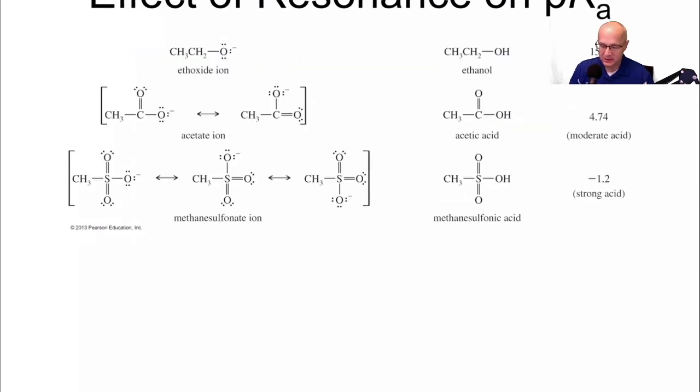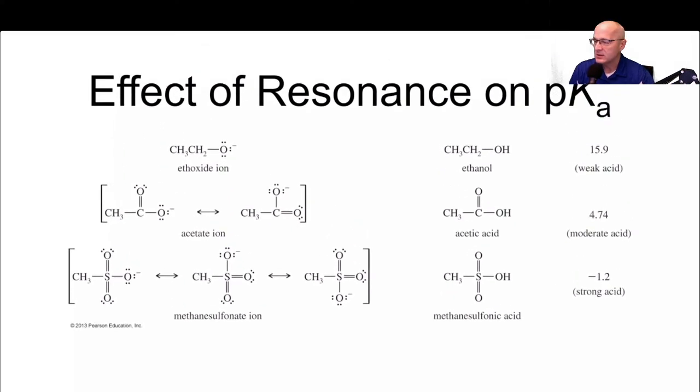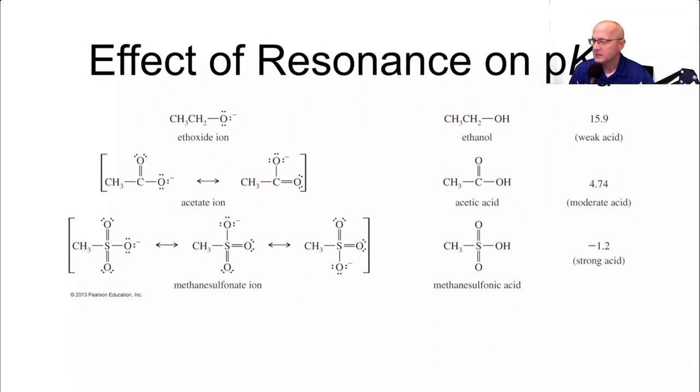Let's talk about the effects of resonance on pKa. Hopefully you guys all know, pKa is a measurement of acidity. The lower the pKa, the more acidic an acid is. The higher the pKa, the less acidic. Here's a pKa of basically 16, 15.9. Here's a pKa of 4.7. Here's one of negative 1.2. So this is our strongest acid.